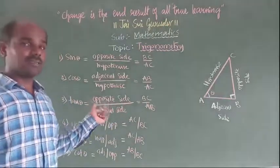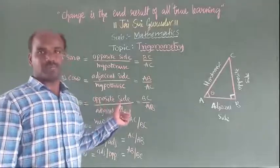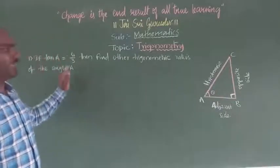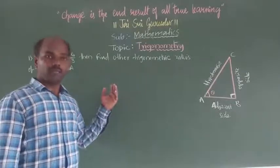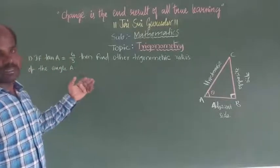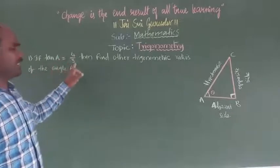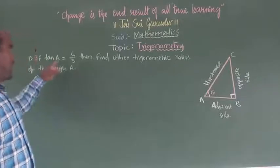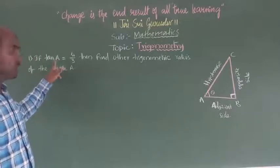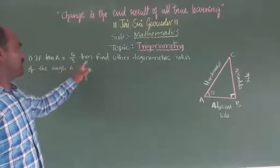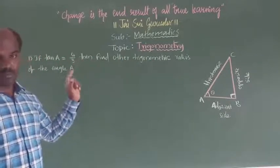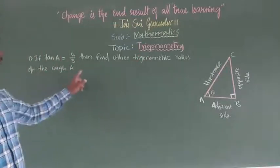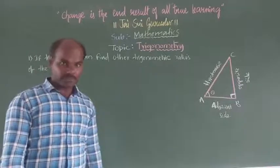If you remember this, we can complete the remaining exercises and example problems. Now we are going to one of the example problems. What is given and what you have to find - first observe and understand. If tan A is equal to 4 by 3, and in triangle ABC with angle A, find the other trigonometry ratios of angle A.